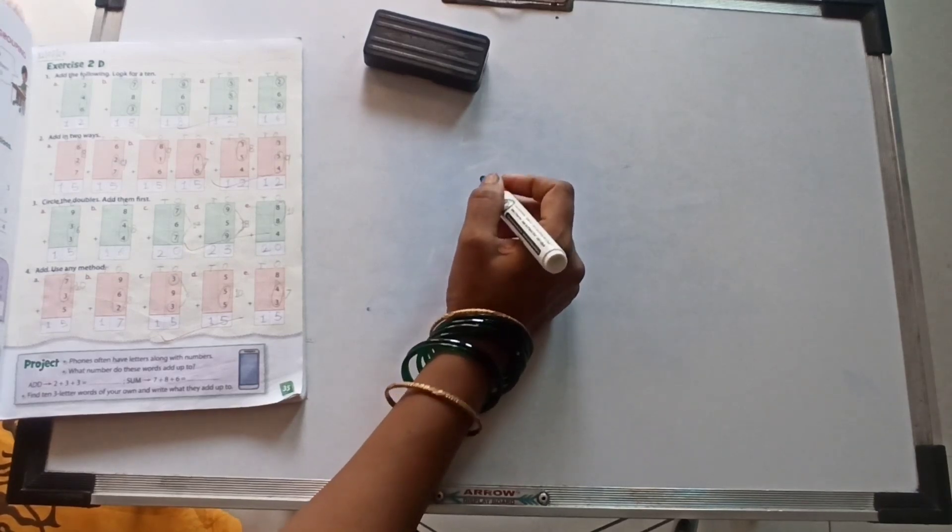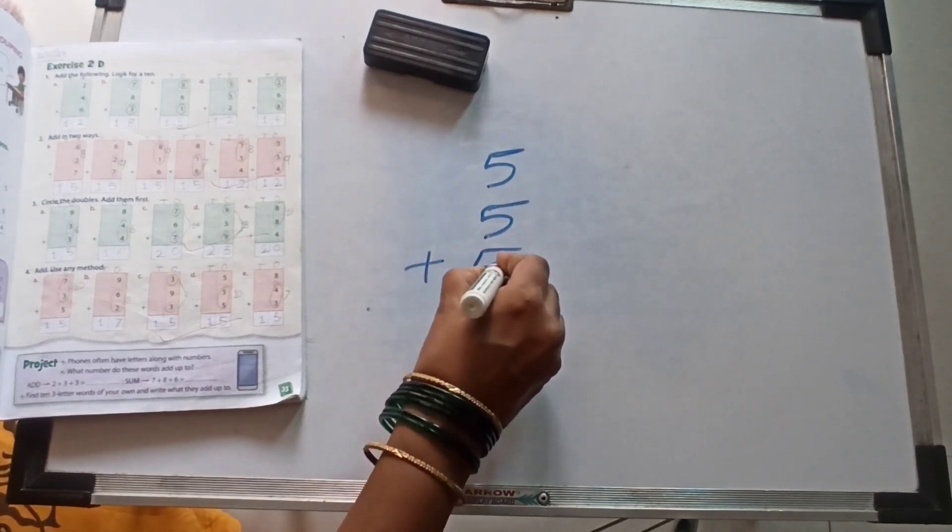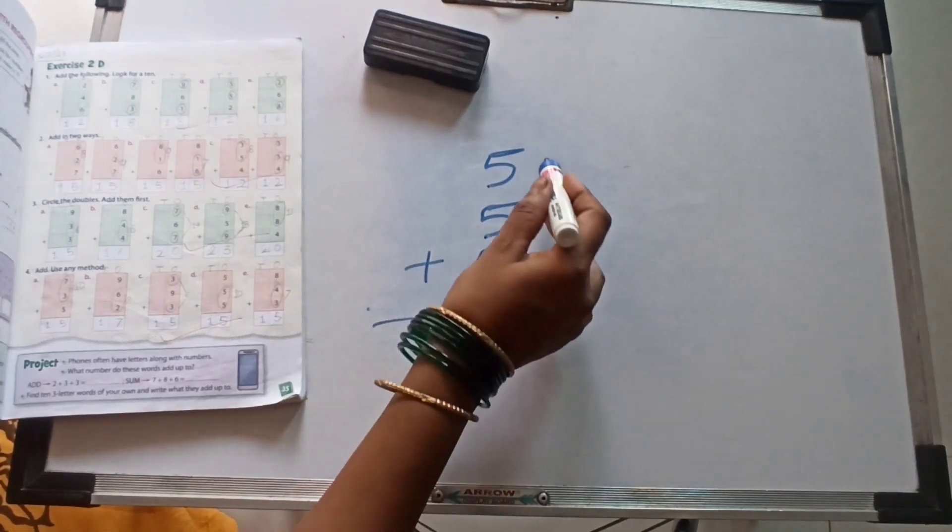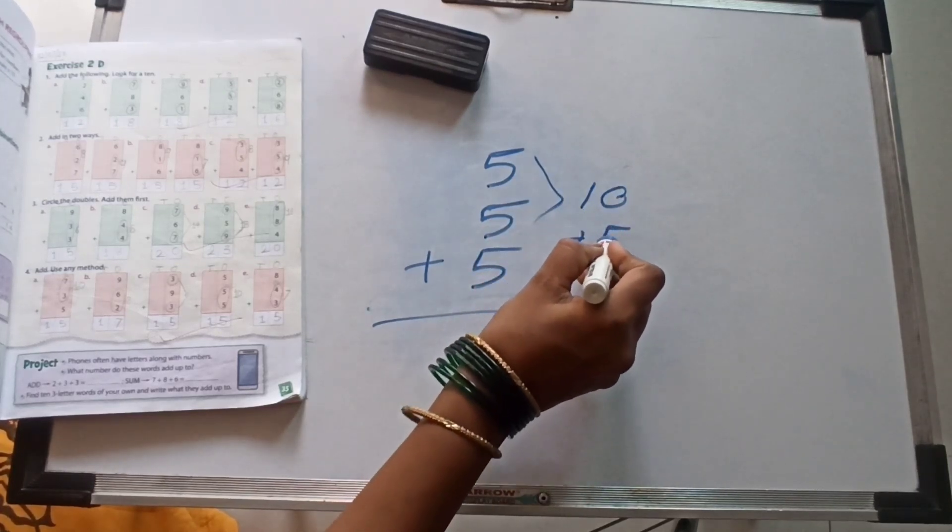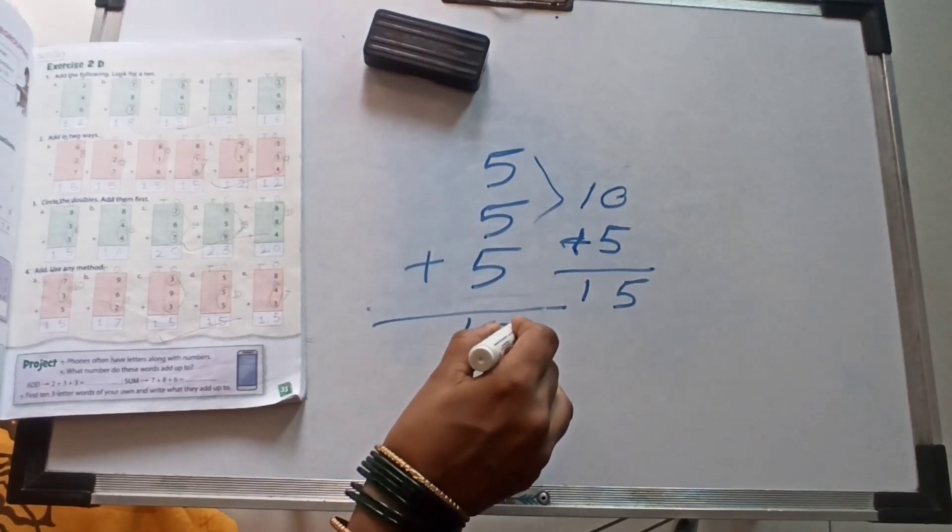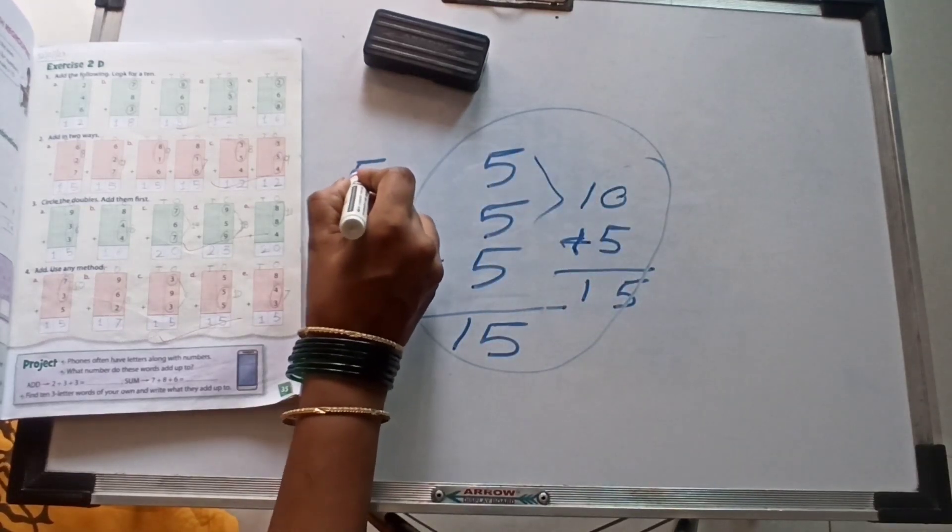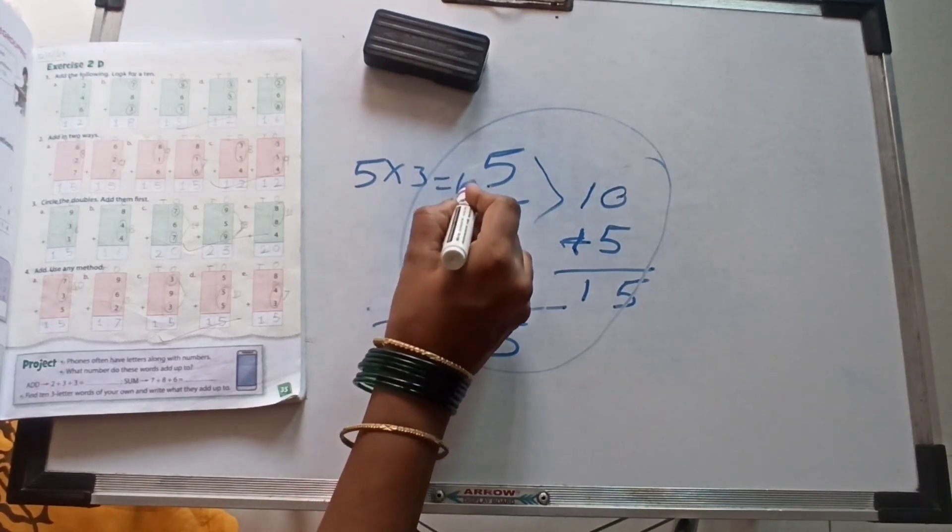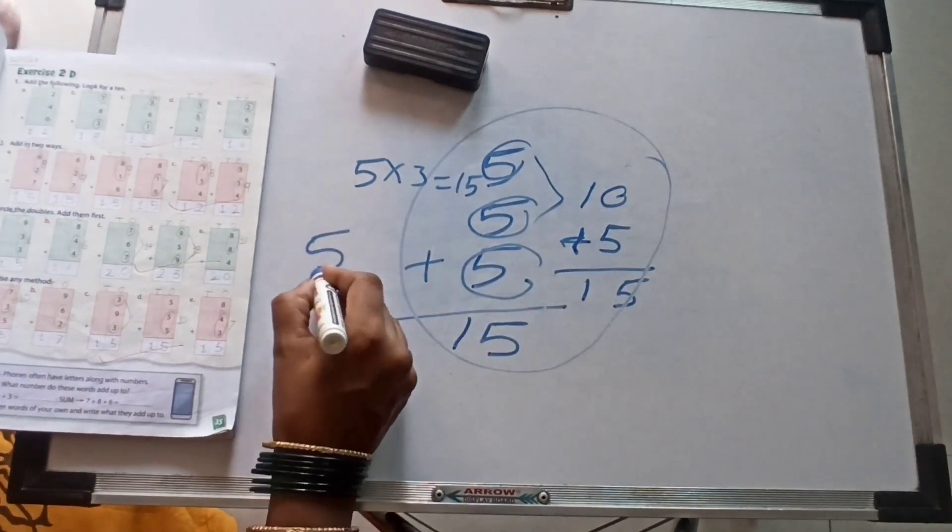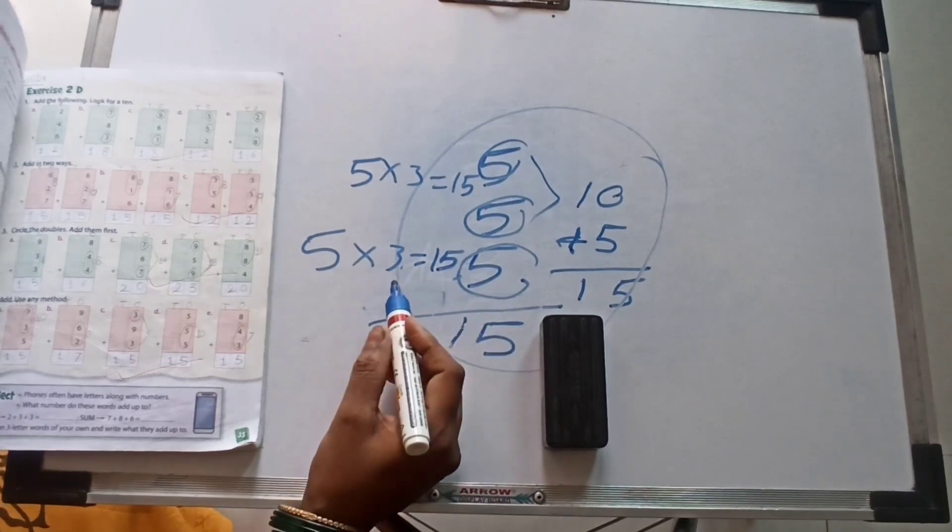Question number 4, our sum, D number. 5 plus 5 plus 5. It's a very, very interesting sum. All of you know. 5 plus 5, 10. 10 plus 5, 5. And so 1, write down your name, 15. Or students, all of you know, 5, 5 threes are, how many? 15. Because here 1, 2, 3 fives. So we use here 5 threes are 15.